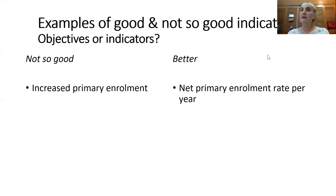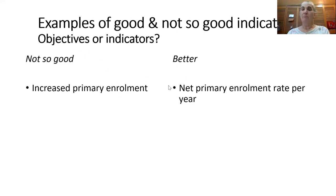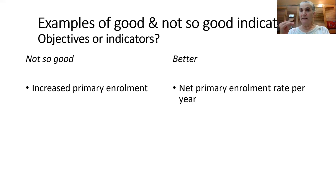Sometimes you may think you have an indicator, but you really have an objective. If you say something like 'increased primary enrollment,' that's more of an objective you're trying to achieve. But if you make it numerical — like a specific net primary enrollment rate per year — that will indicate you have an indicator for something you can actually measure.